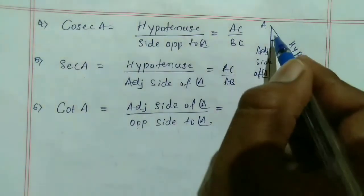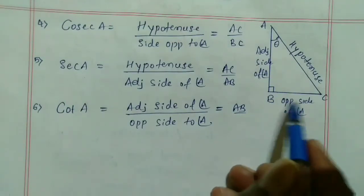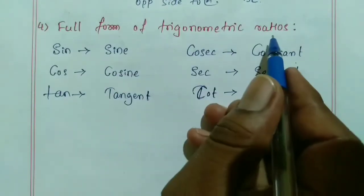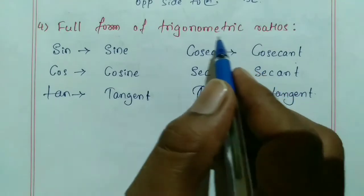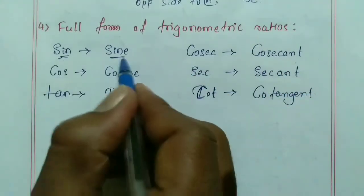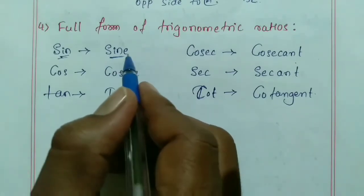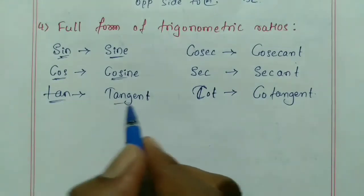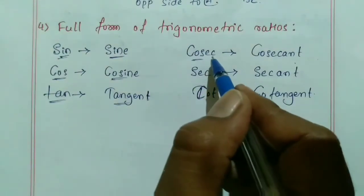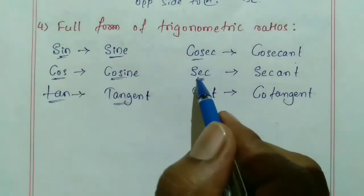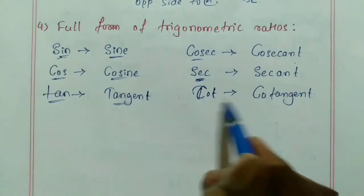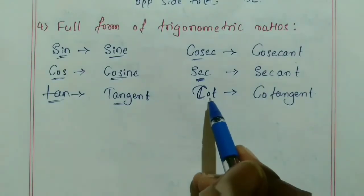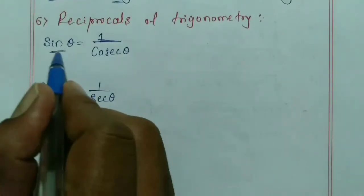The full forms of the trigonometric ratios are: sin → sine, cos → cosine, tan → tangent, cosec → cosecant, sec → secant, and cot → cotangent. So you can read them as sine, cosine, tangent, cosecant, secant, and cotangent.